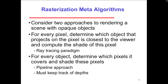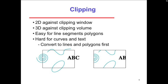For every object, we can determine which pixels it covers and shade those pixels — this is a pipeline approach. We must keep track of the depths: which images are being projected on top of which others. Then shading, taking the colors and blending them together for opaque images so you can see what's underneath in terms of the shaping.